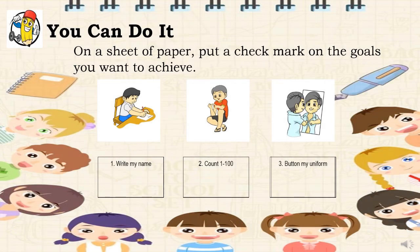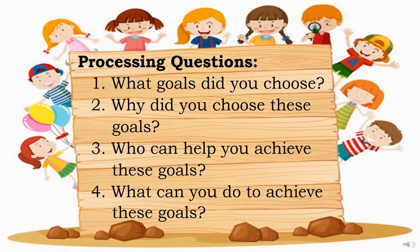For the You Can Do It activity, on a sheet of paper, you are going to put a check mark on the goals you want to achieve. After you've finished the activity, you may now answer the four processing questions: 1. What goals did you choose? 2. Why did you choose these goals? 3. Who can help you achieve these goals? And 4. What can you do to achieve these goals?